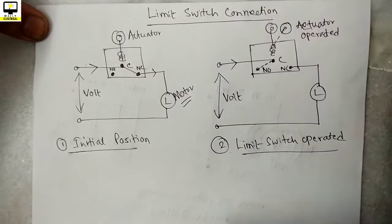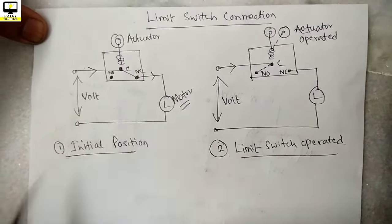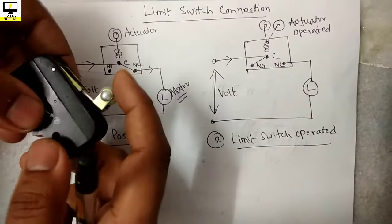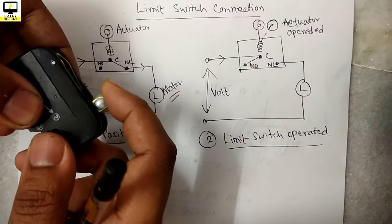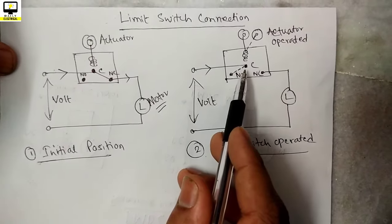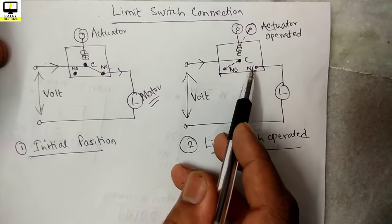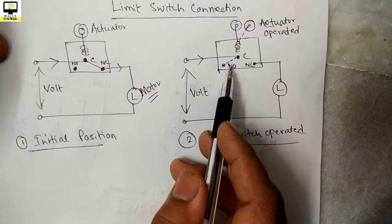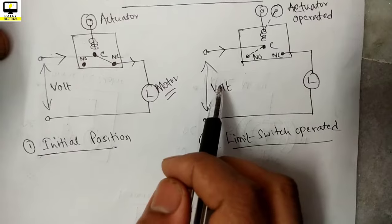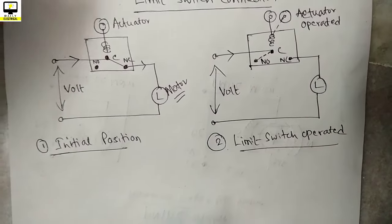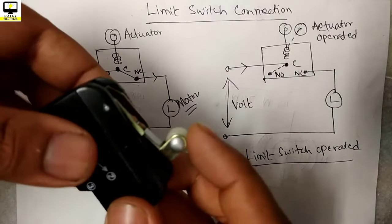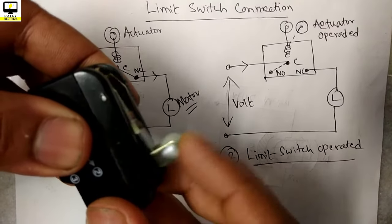But whenever in the second position limit switch is operated, that means this actuator has been shifted by a pressure of any moving object, then the voltage you have provided to the common connection cannot go to the NC connection because the potential free contacts has been changed to NO. Then the series circuit is broken and the load is disconnected from the supply. In this way, using a limit switch you can connect or disconnect a supply from the load by operating the limit switch head.